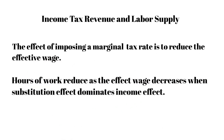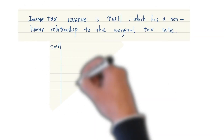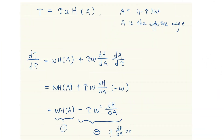The effect of imposing a marginal tax rate is to rotate the budget line inwards. Hours of work decrease as the effective wage decreases when the substitution effect dominates the income effect. When the marginal income tax rate increases, the change in income tax revenue is uncertain: the first term is positive while the second term is negative if a lower effective wage rate lowers the hours of work.